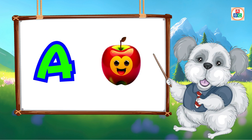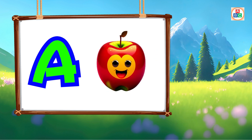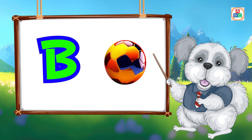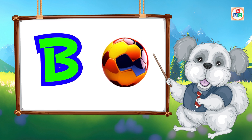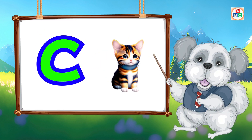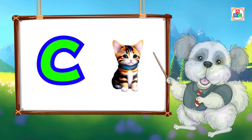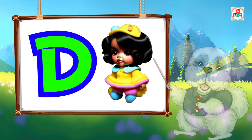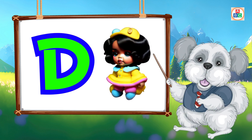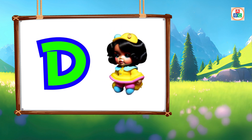A is for apple, a-a-apple. B is for ball, b-b-ball. C is for cat, c-c-cat. D is for doll, d-d-doll.